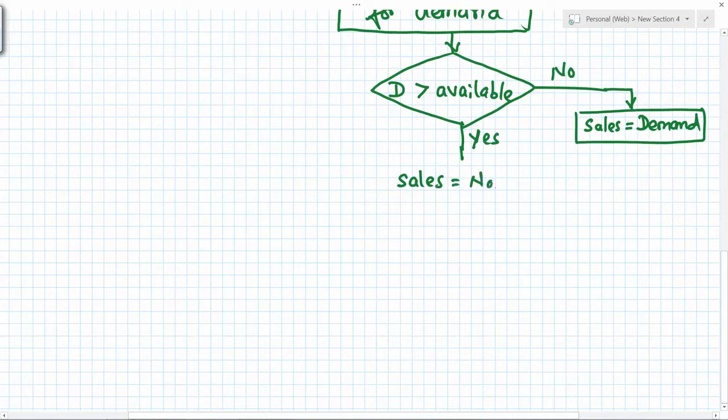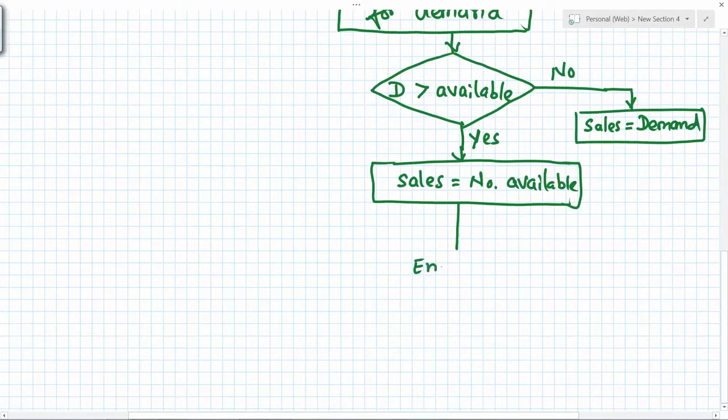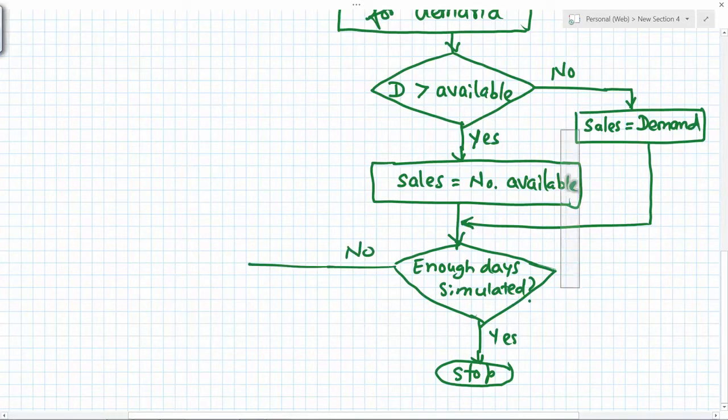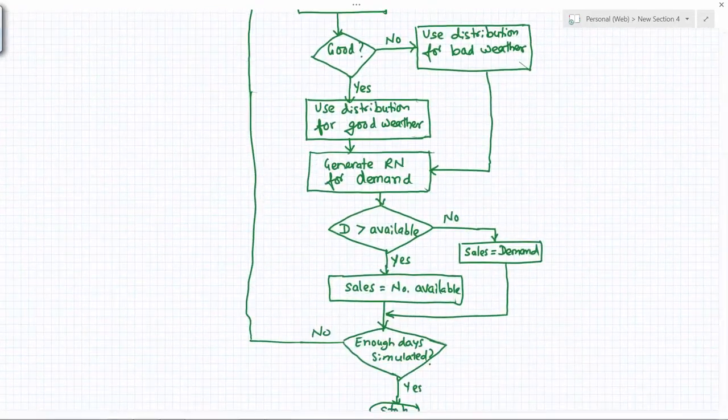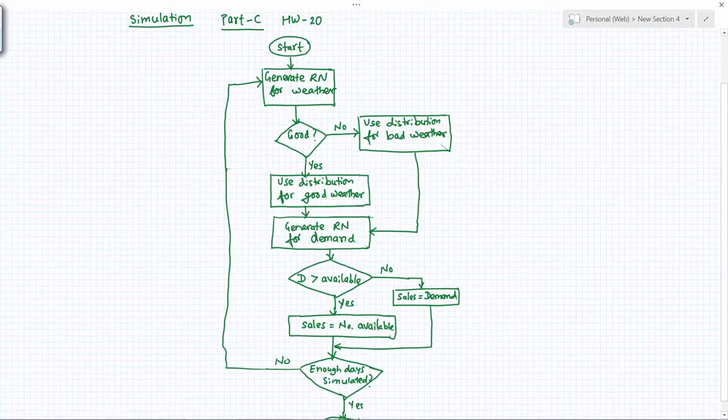Then we again ask the question if we have simulated enough days. If the answer to this question is yes, then we have completed simulation and we can stop. This line here will join in at this location. But if the answer to this question is no, then we go back to generating random number for weather here. This will complete the flowchart for part c.